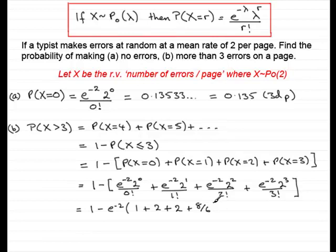I could have cancelled that down to 4 thirds, but it's quite quick to just do that sum. If you do that on your calculator, you should find that you get 1 minus 0.85712, and so on. Do check that, and then if you subtract that from 1, you'll find that you get 0.14287, and so on. If we round that up, you'll find you'll get 0.143 to 3 decimal places.